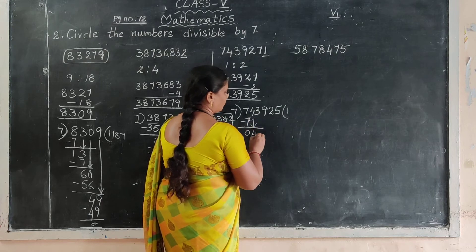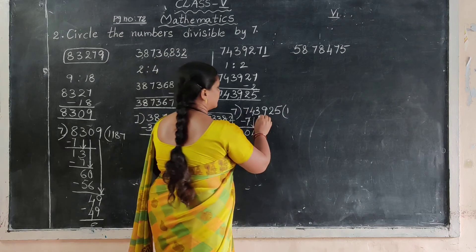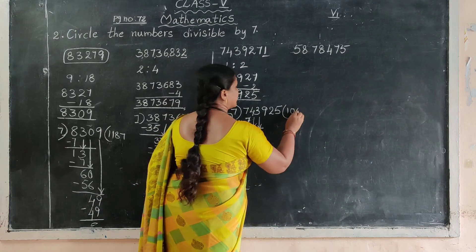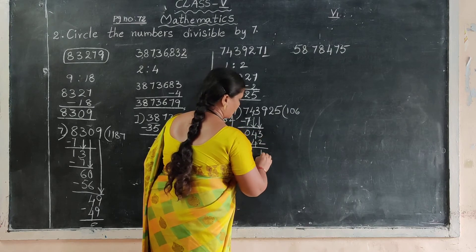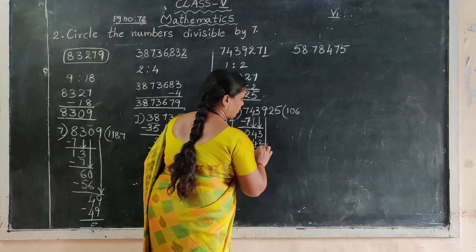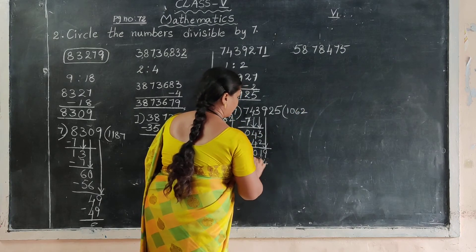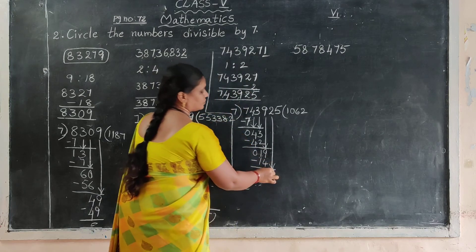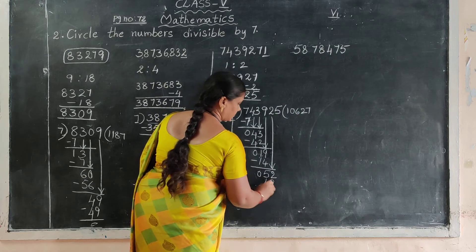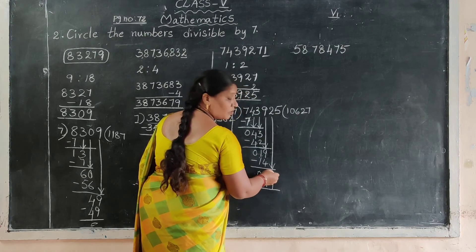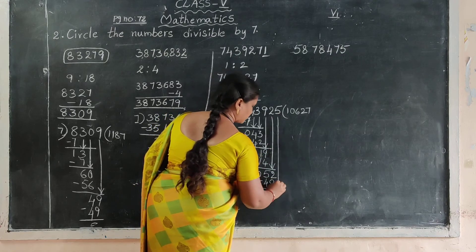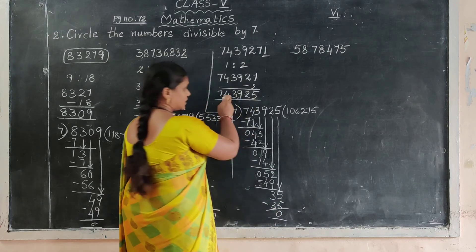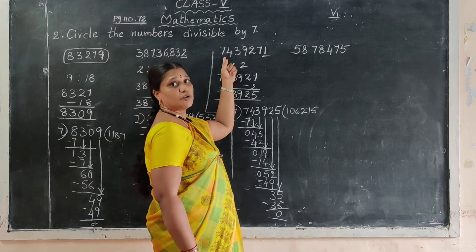Drop the next digit: 4. 4 is not divisible by 7, so drop the next digit too — giving 43. 6 sevens are 42; 3 minus 2 equals 1, 4 minus 4 equals 0. Drop the next digit 9, giving 19. 7 twos are 14; 9 minus 4 equals 5, 1 minus 1 equals 0. Drop the next digit giving 52. 7 sevens are 49; 2 minus 9 not possible, take borrow: 12 minus 9 equals 3. Giving 35; 7 fives are 35. So this number is divisible by 7.